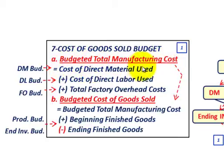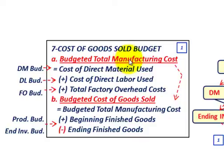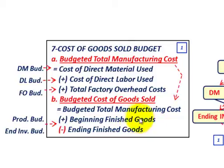You start with the cost of your direct material used — that comes off your direct material budget. Then you add the cost of direct labor used from your direct labor budget. Then you add the total factory overhead costs from your factory overhead budget. Once you know your total budgeted manufacturing cost, you can determine your budgeted cost of goods sold by adding beginning finished goods and subtracting ending finished goods, which come from your production budget and ending inventory budget.